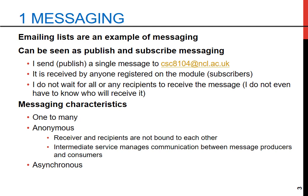This example highlights some key messaging characteristics. First, it's one-to-many, where a single message reaches multiple recipients. Secondly, it's anonymous — the sender and recipients are not directly linked, with an intermediate service managing communication. Finally, it's asynchronous, meaning I don't need to wait for a response. These principles form the basis of messaging in distributed systems, allowing for efficient decoupled communication.